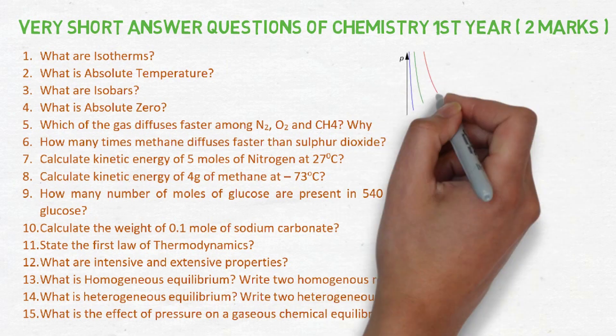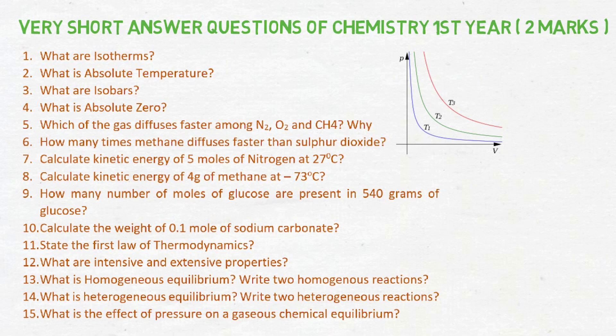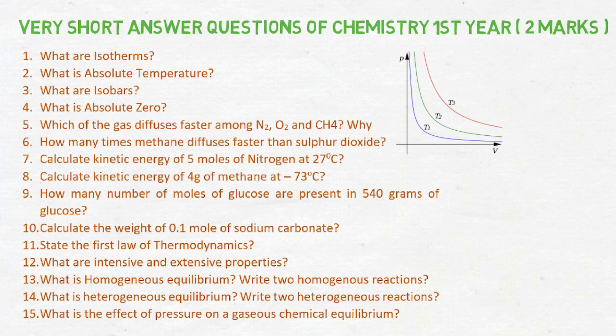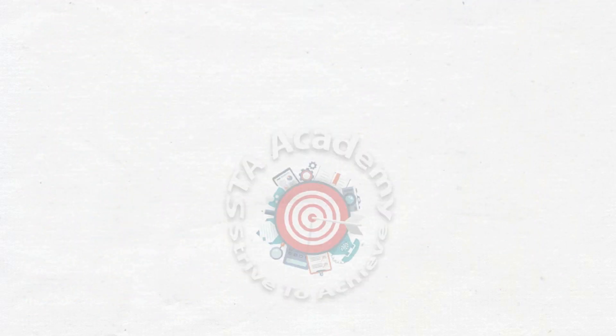Eleventh question is state first law of thermodynamics. Twelve is what are intensive and extensive properties. Thirteen is homogeneous equilibrium. Fourteen is heterogeneous equilibrium. Fifteen is effect of pressure on gases chemical equilibrium. These are 15 VSAQs and after that we have more VSAQs.